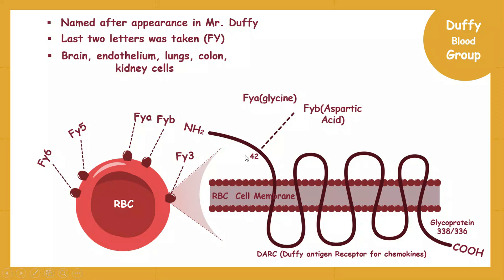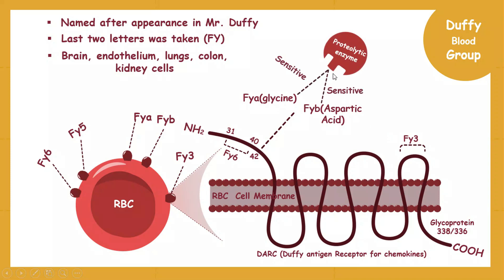FY6 is also present on the N-terminal; amino acids from position 31 to 40 make the FY6 antigen. FY3 antigen is present on the third loop of the glycoprotein. FYA and FYB antigens are proteolytic enzyme sensitive — they are destroyed when treated with proteolytic enzymes — while FY3 antigen is resistant and is not degraded by these enzymes.